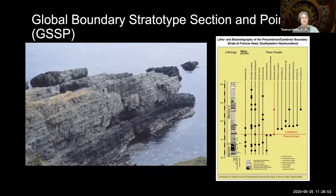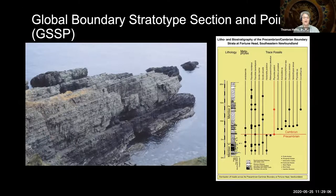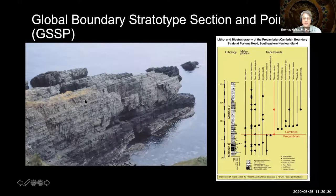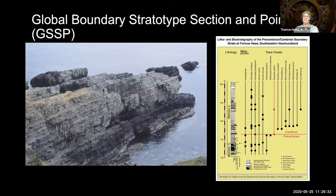It's called a GSSP — a Global Boundary Stratotype Section and Point. The Precambrian is also subdivided, and people are working to develop GSSPs for those. Somewhere on this outcrop is the GSSP for the Cambrian, formally defined based on the presence of a sort of trace fossil or burrow, related to a shift in carbon isotopes. Ultimately, there is a physical point on that slab that is the base of the Cambrian — that's our reference point.